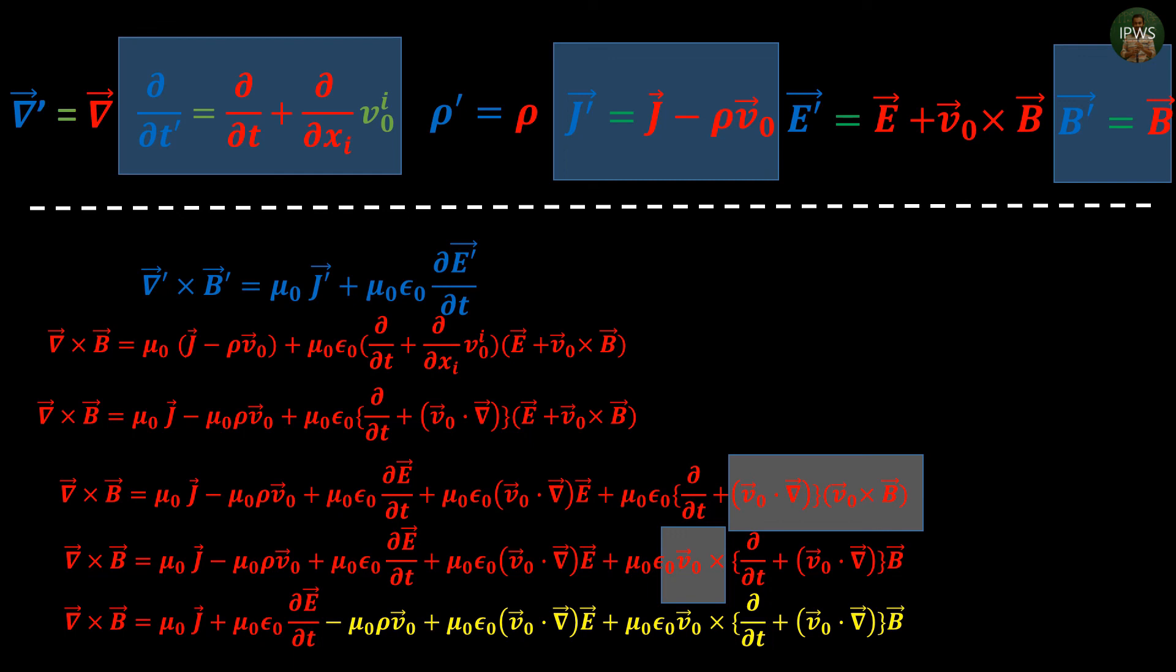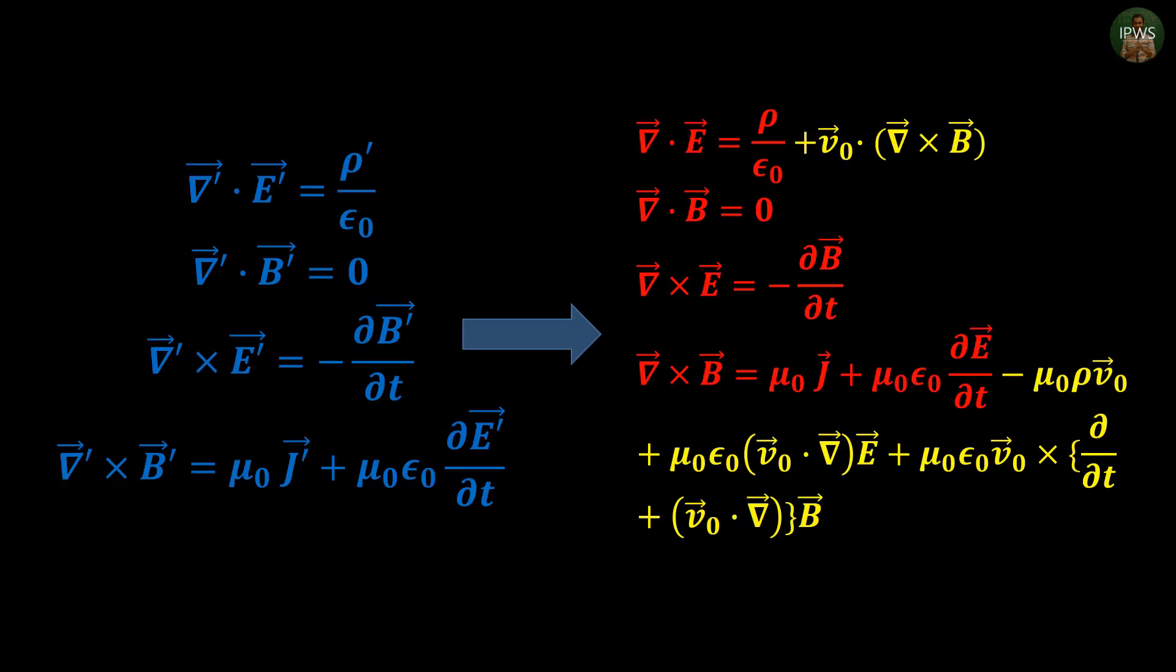And with this it is clear that not all Maxwell's equations remain unchanged under Galilean transformation. So Galilean relativity fails to be compatible with electromagnetism. And it is revealed that electromagnetism is not a part of three-dimensional space-time geometry. So we look for higher dimensions.